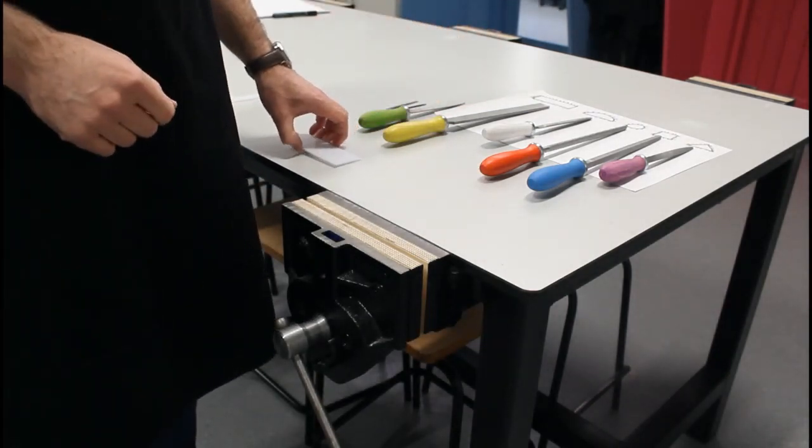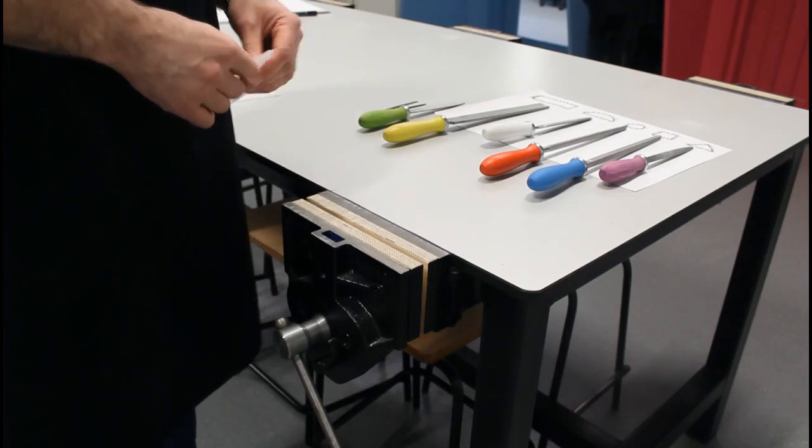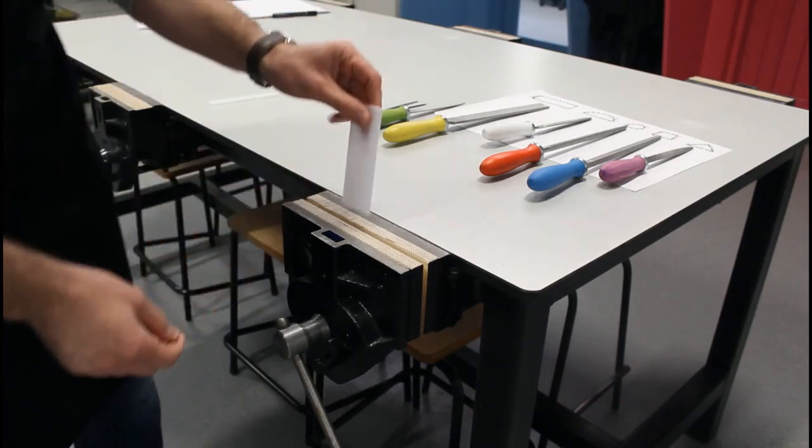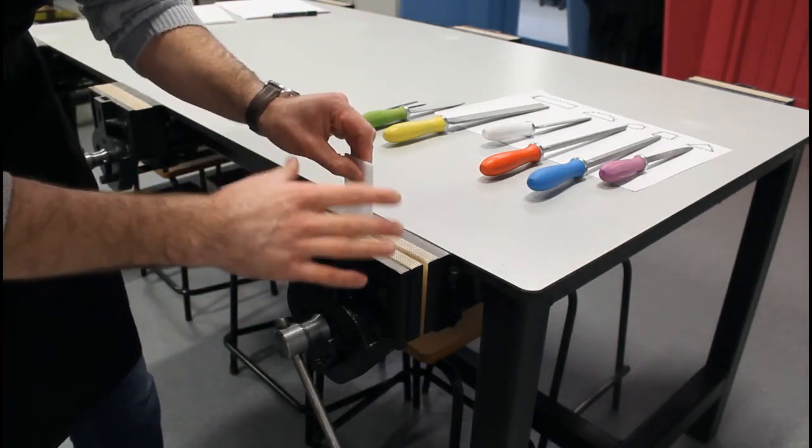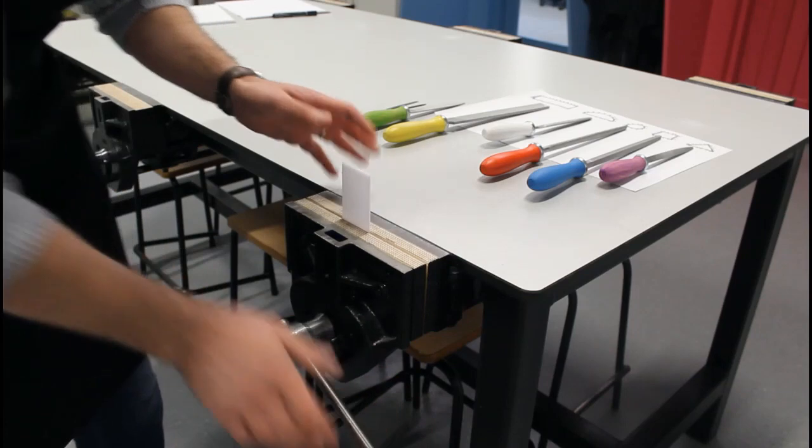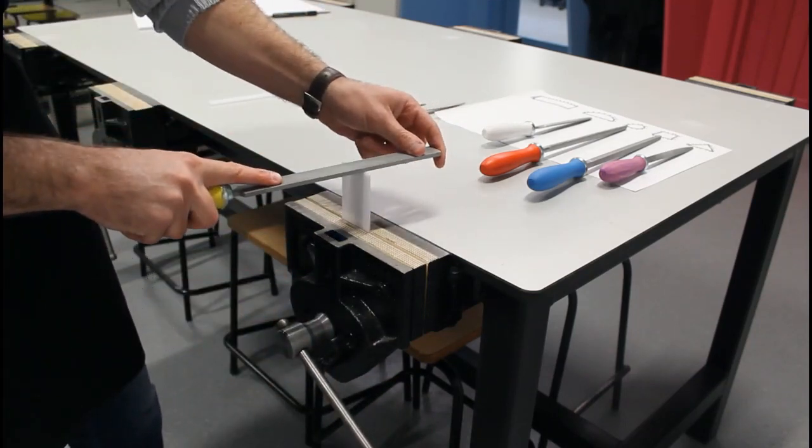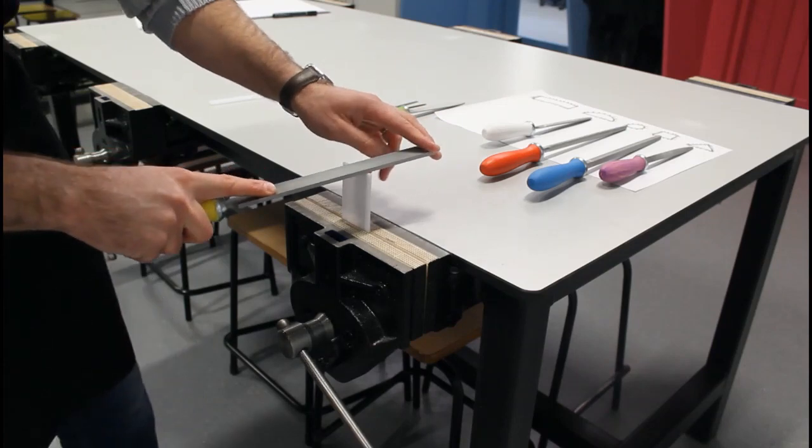A few things we have to consider when we're filing our material, so we're just going to use three mill acrylic here. When we're filing, we need to use the bench vise to clamp the material so we can get hands-free and we can apply our file to the material.